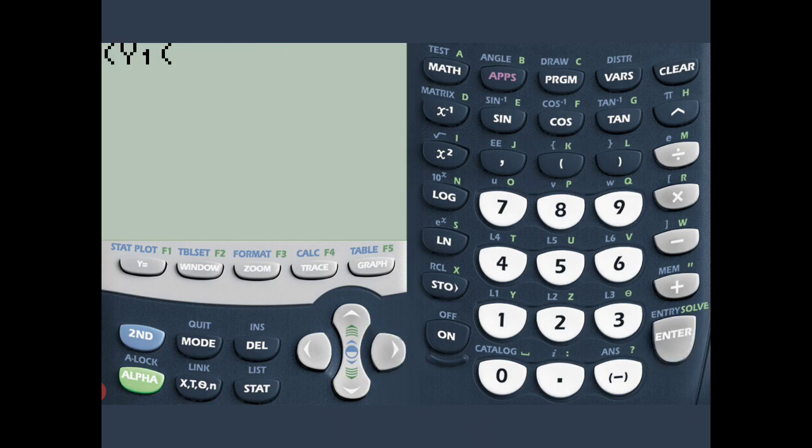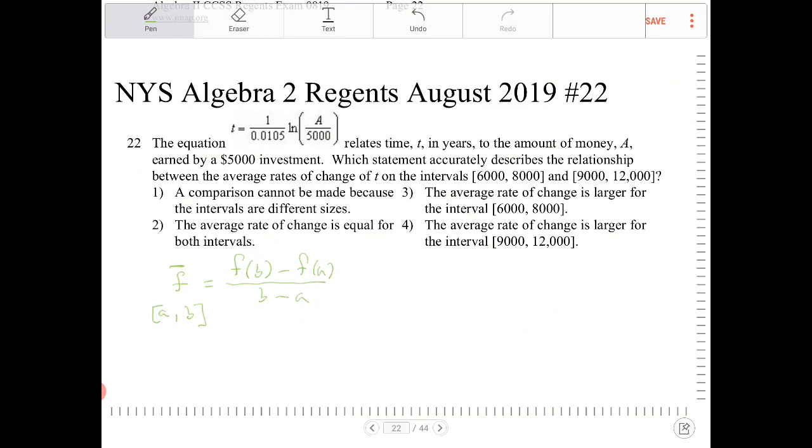There are two different things I have to test here. There is 6,000 to 8,000, and then the other one is 9,000 to 12,000.